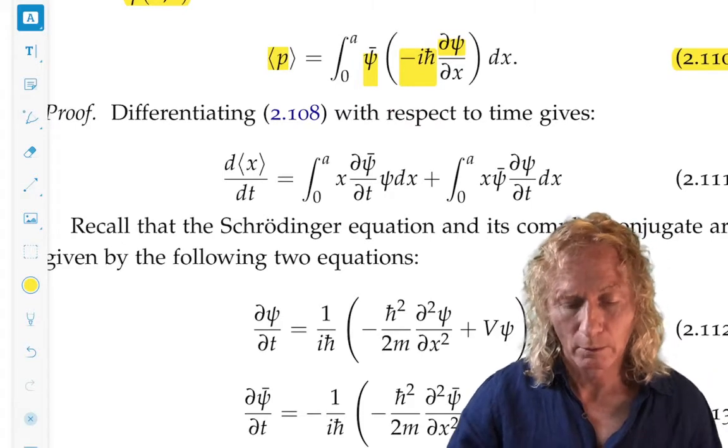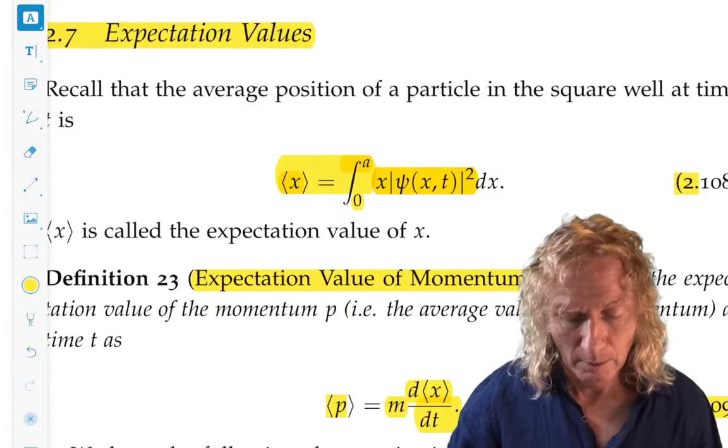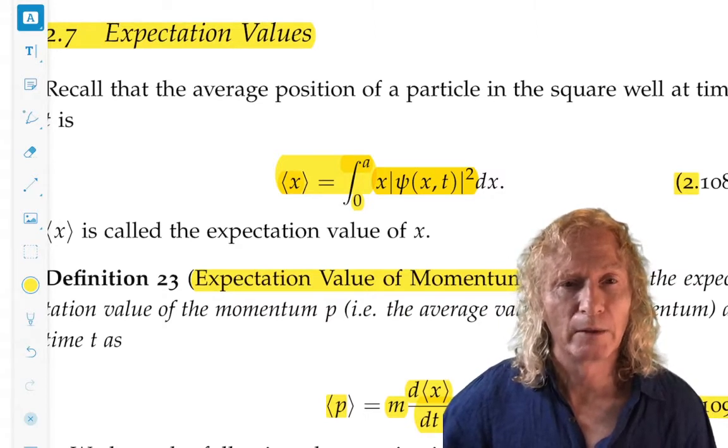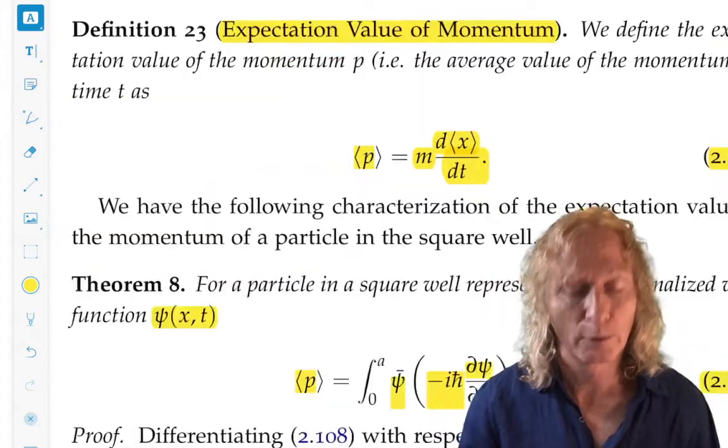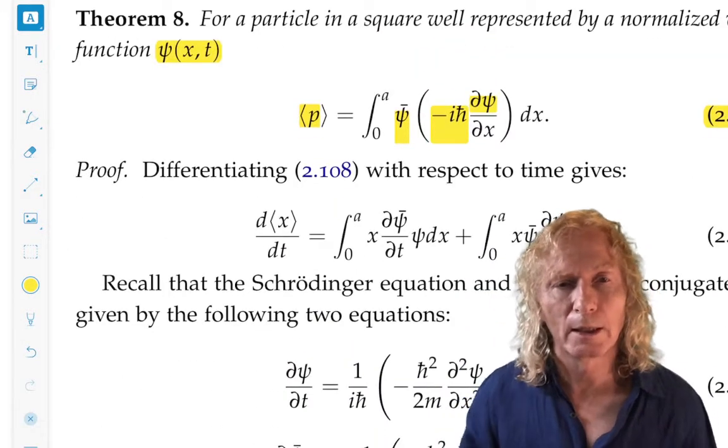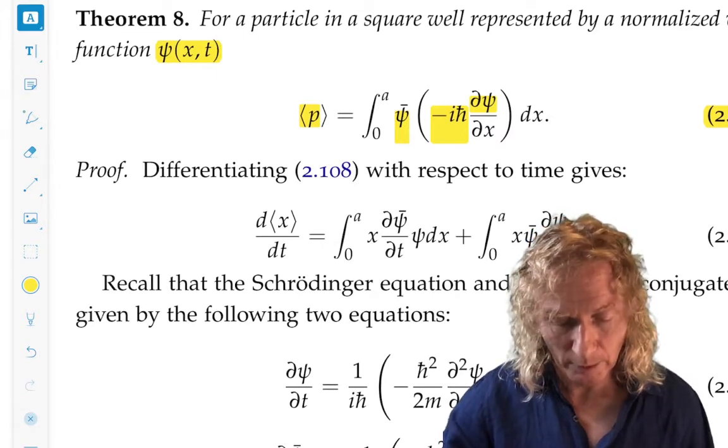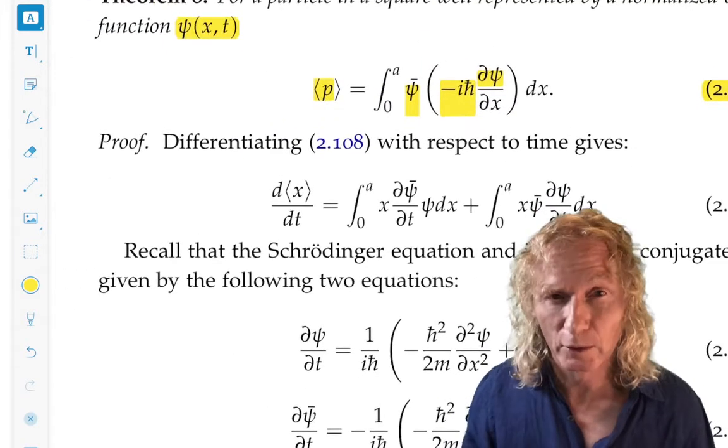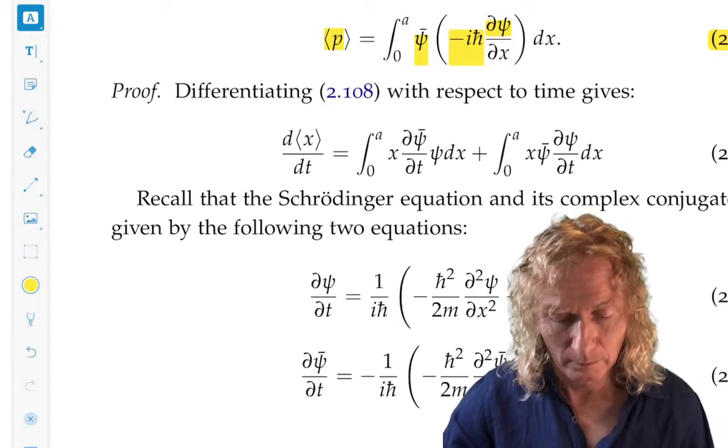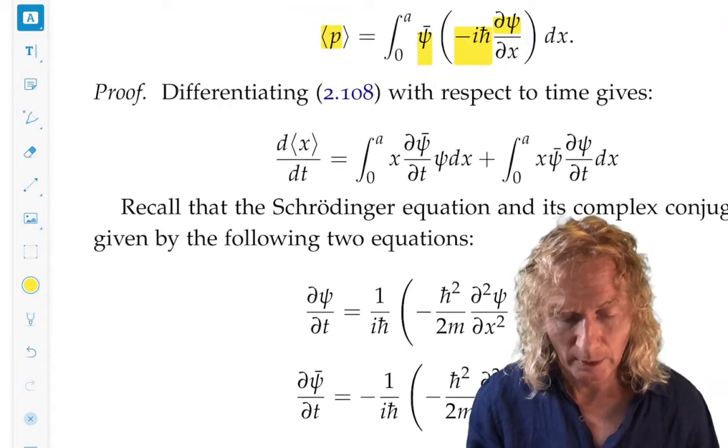Use definition 23 and prove that this integral is the same. So, rather than writing out mod psi of x, t squared, we write it as x psi psi bar. And then we differentiate it with respect to time. Using the product rule, we can take it under the integral sign with no problem because the endpoints don't depend upon time and it's a nice finite integral.